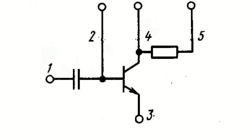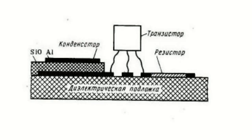On the same substrate, the inter-element and inter-component connections, as well as pads, are implemented. For various semiconductor circuits, the structure of the hybrid chip will look like this. Design and manufacture of hybrid circuits is advisable for solving specific, particular problems with a relatively small number of required products.